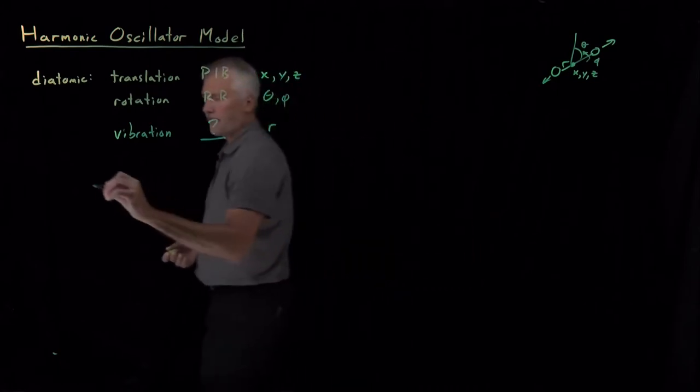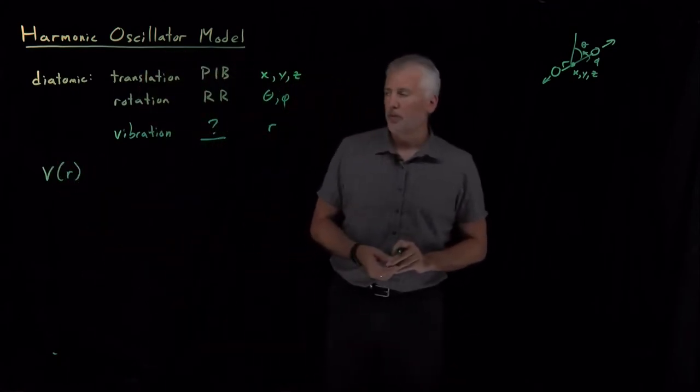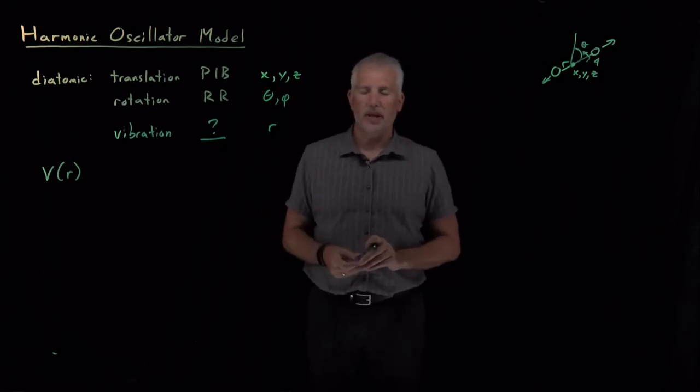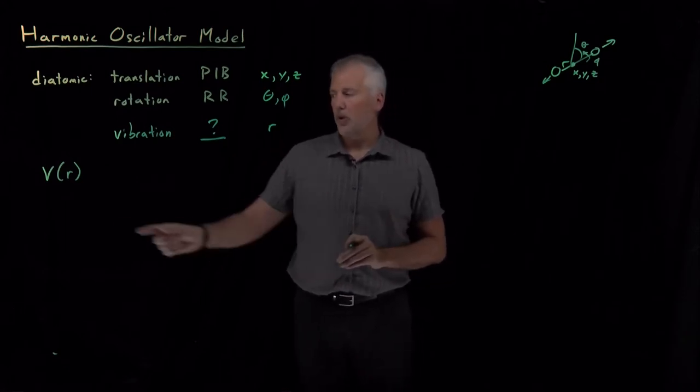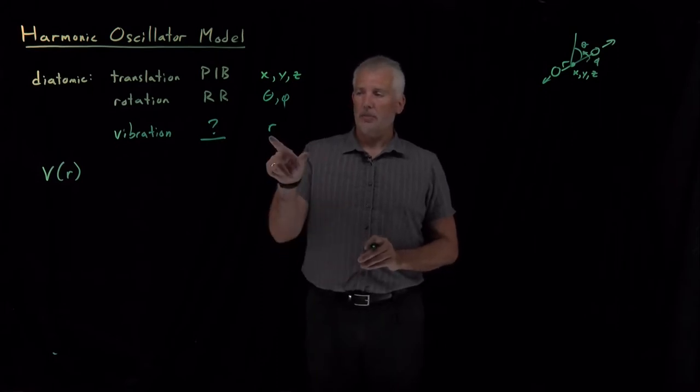The first step that we always need to do in any quantum mechanical problem is to write down the potential energy. We can't write down Schrodinger's equation until we know what potential energy to plug into that Schrodinger equation. The potential energy is going to depend on this variable r, the bond length.